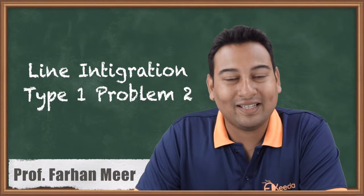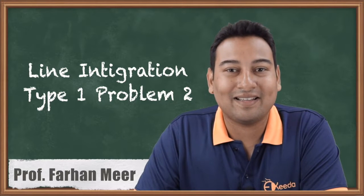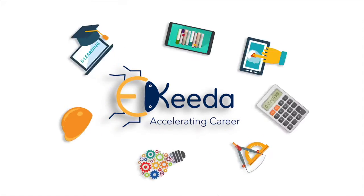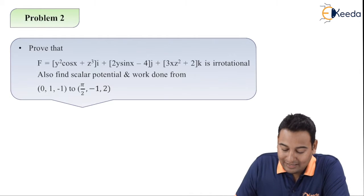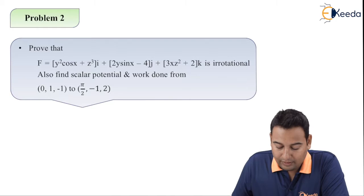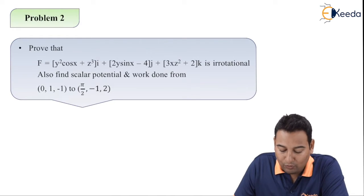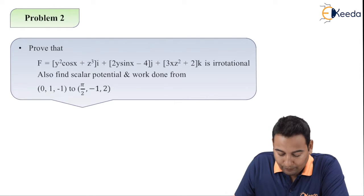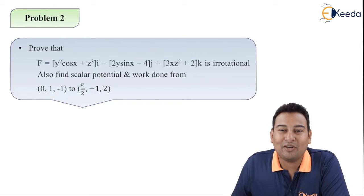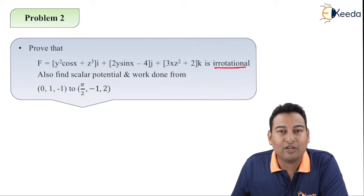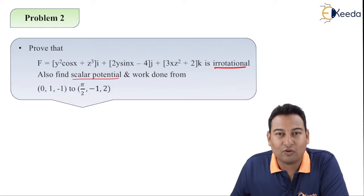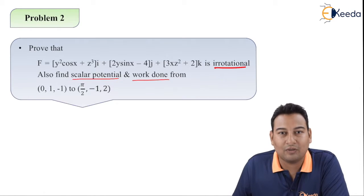Hello friends, in this video we'll be discussing vector integration type 1, line integration, and this is our second example. The given problem: F bar equals y squared cos x plus z cubed i plus 2y sin x minus 4 j plus 3xz squared plus 2 k. We need to prove it is irrotational, find the scalar potential, and find the work done from (0,1,-1) to (π/2, -1, 2). There are three parts, each worth two marks.